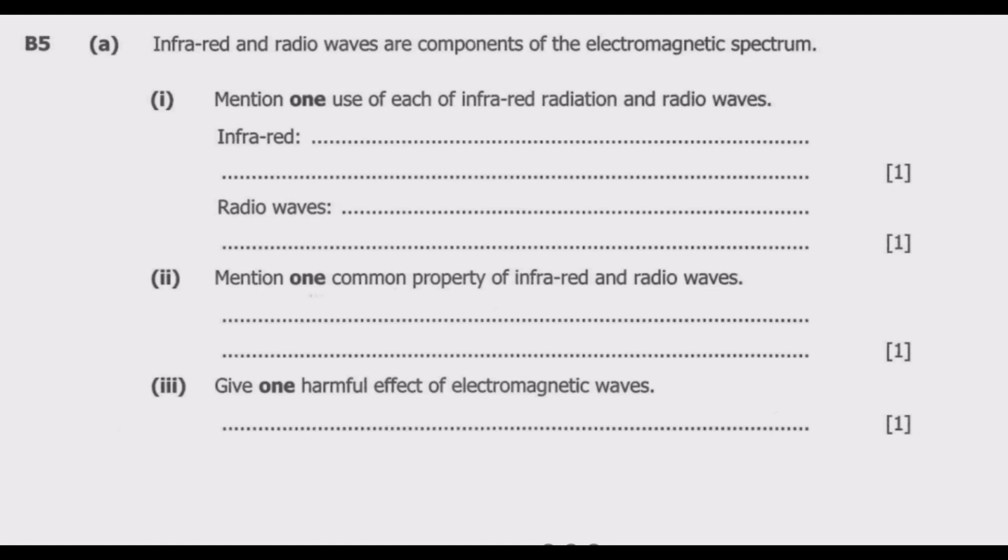Question B5a reads: Infrared and radio waves are components of electromagnetic spectrum. Roman number 1, mention one use of each of infrared radiation and radio waves. The common use of infrared is used in remote control. These are the common remotes that we use in our daily life at home for the TV or sound system.